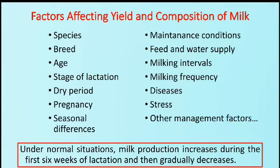There are some factors that affect the yield and composition of milk: the species, breed, age, stage of lactation, dry period, pregnancy, seasonal differences, maintenance condition, feed and water supply, milking intervals, milking frequency, diseases, stress, and other management factors. Under normal situations, milk production increases during the first 6 weeks of lactation and then gradually decreases.